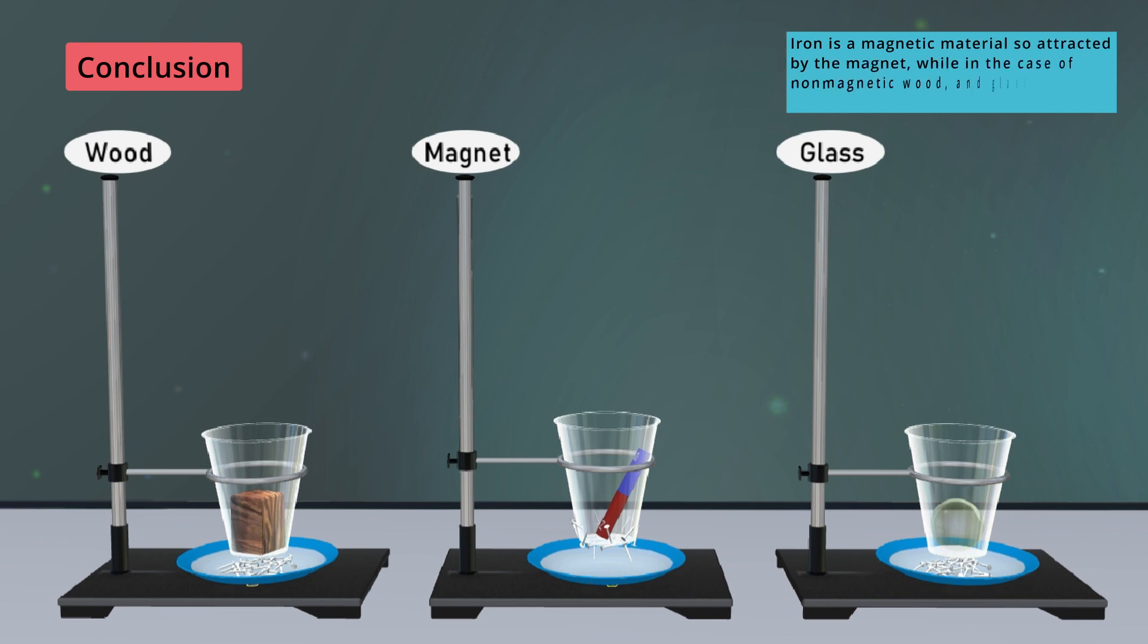Iron is a magnetic material so attracted by the magnet, while in the case of non-magnetic wood and glass, they are not attracted by a magnet. Click on learning or evaluation buttons to play the activity again.